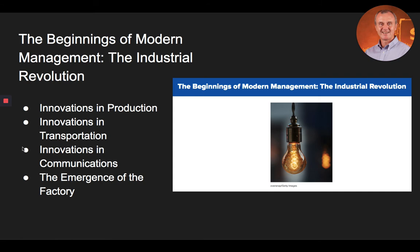Now let's talk about the beginnings of modern management with the Industrial Revolution. For hundreds, if not thousands of years, business was fairly stagnant and followed a basic process. Leading up to the 1700s and early 1800s, most households were engaged in agriculture or commercial trade of their goods. Agricultural pursuits were conducted on small farms, and the trade and production of most manufacturing operations was done on a small scale in people's homes. This was called the domestic system of production.